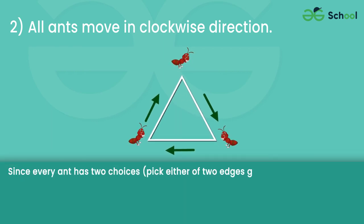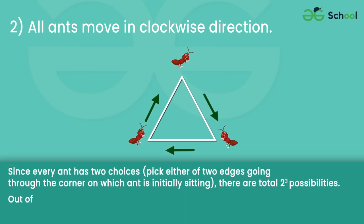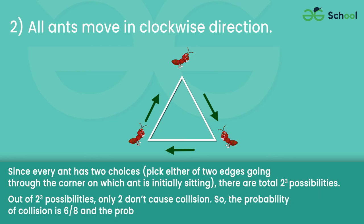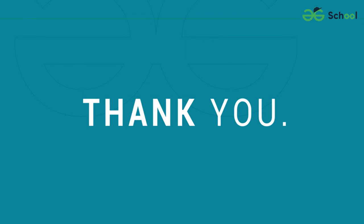Since every ant has 2 choices — pick either of 2 edges going through the corner on which the ant is initially sitting — there are a total of 2 raised to the power 3, which is 8 possibilities. Out of these 8 possibilities, only 2 don't cause a collision. So the probability of collision is 6 by 8, and the probability of non-collision is 2 by 8. Thank you.